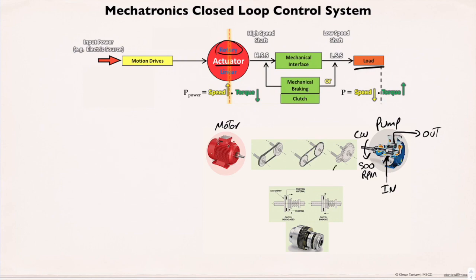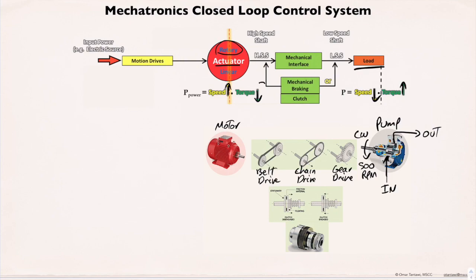In most applications, the motor shaft rotates at a higher speed with less torque than what the load requires. In this case, one of three mechanical drives must be used as a linkage — such as gear drive, chain drive, or belt drive — to match the motor speed and torque with the pump's rated speed and torque. Matching means decreasing the motor speed and increasing its torque by using different sizes of gears, sprockets, or pulleys.